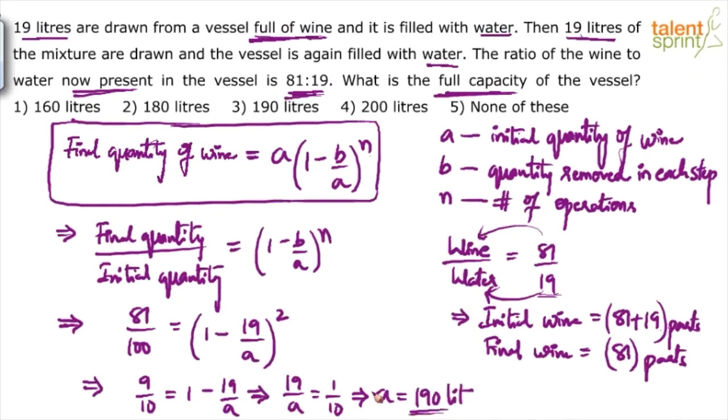So we can say initially the quantity of wine was 190 liters, or the full capacity of the vessel was 190 liters, which is option 3.